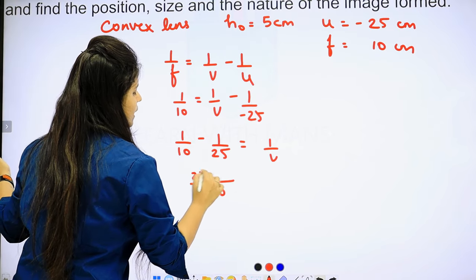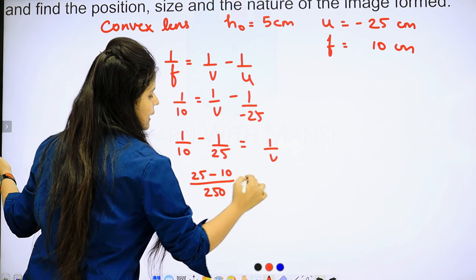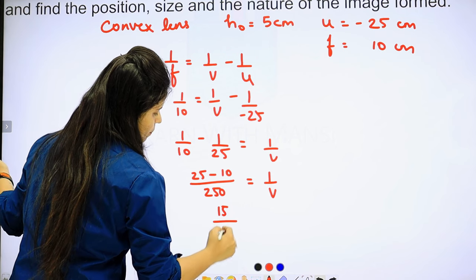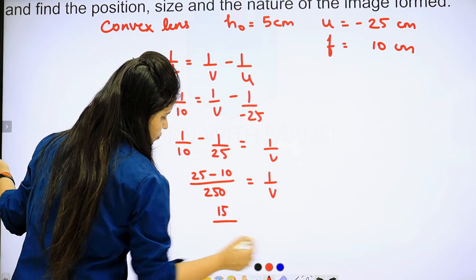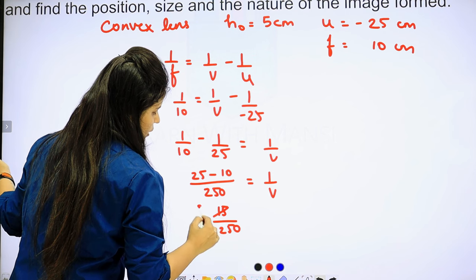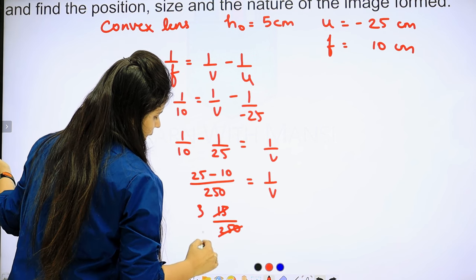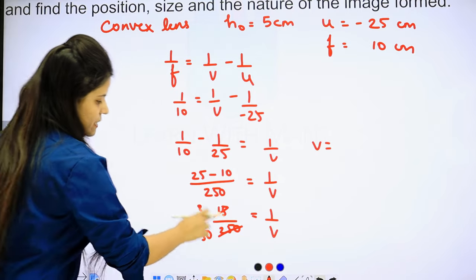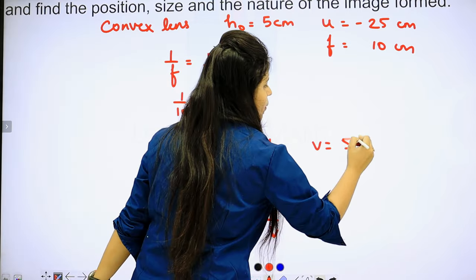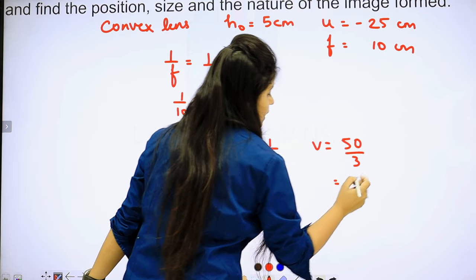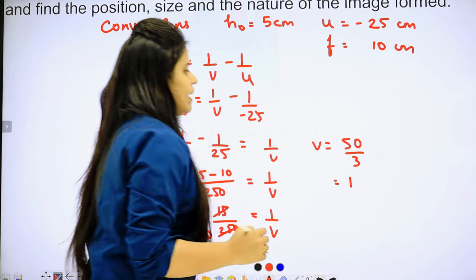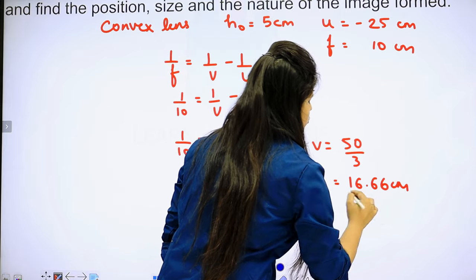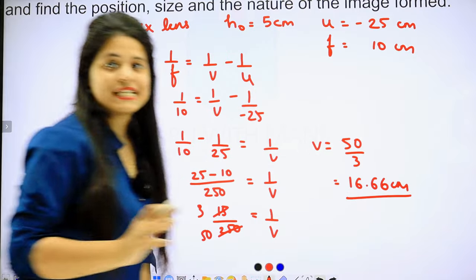Taking the LCM of 250, we multiply: 25 upon 250 minus 10 upon 250, giving 15 upon 250. Simplifying by dividing by 5, we get 3 upon 50 equals 1 upon v. Taking the reciprocal, v equals 50 upon 3, which equals 16.66 cm. So our image distance is 16.66 cm.